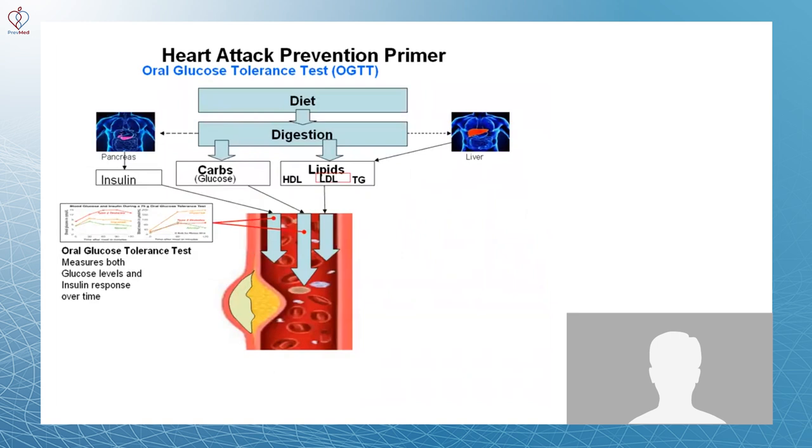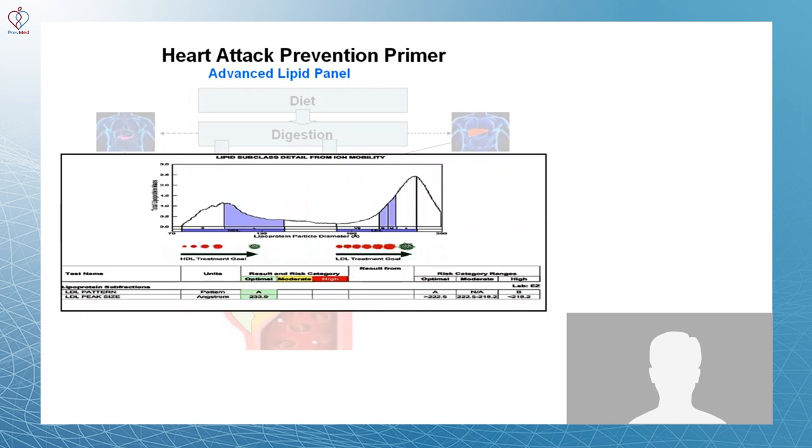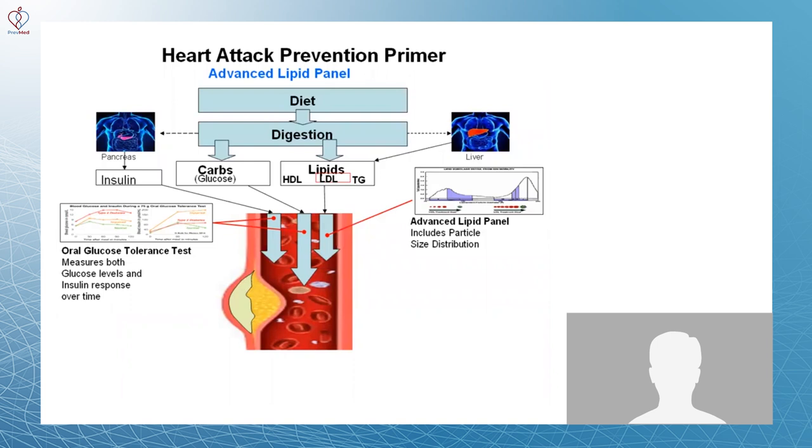The second component is an advanced lipid panel, which is very available, very inexpensive, and gives you vastly more information than just looking at your lipid levels traditionally, which I was, and was led into a false sense of security.